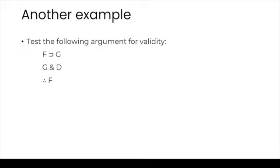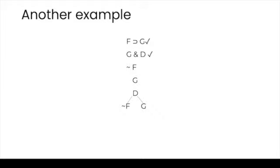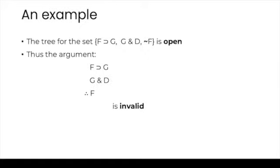Now let's test another argument for validity. We draw the tree and what happens? Both of the paths are open, so the tree is open. That means the argument is invalid. The tree for the set is open, so the corresponding argument is invalid.